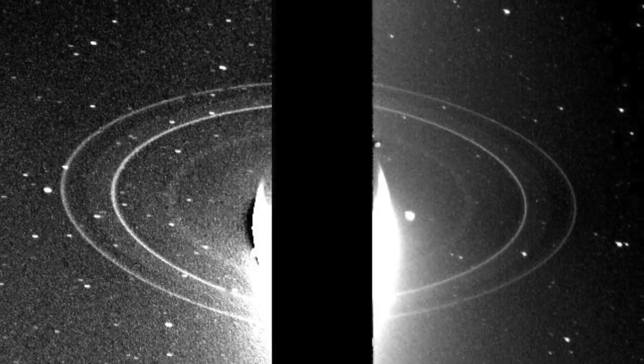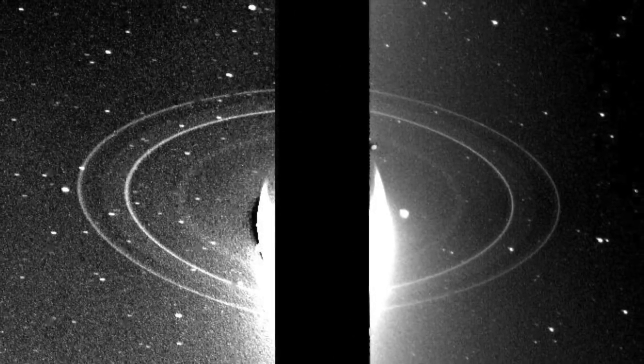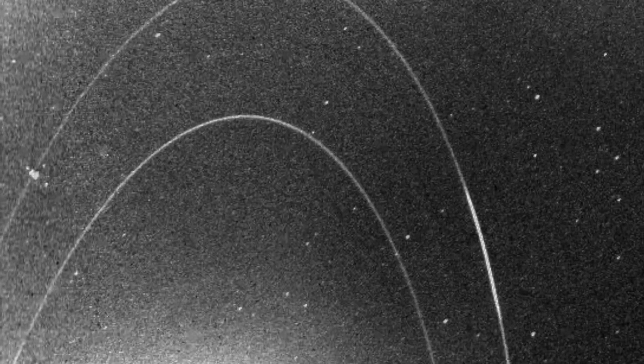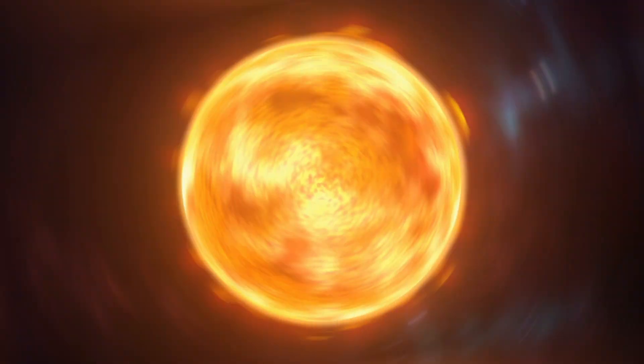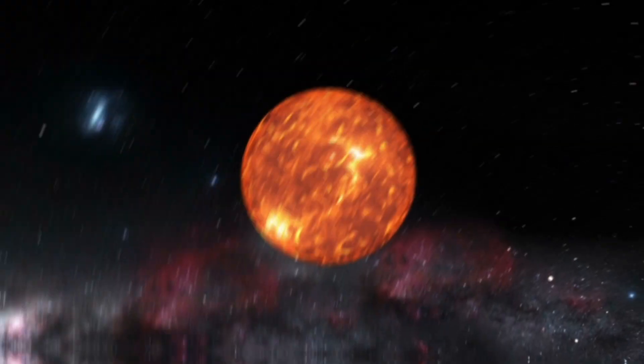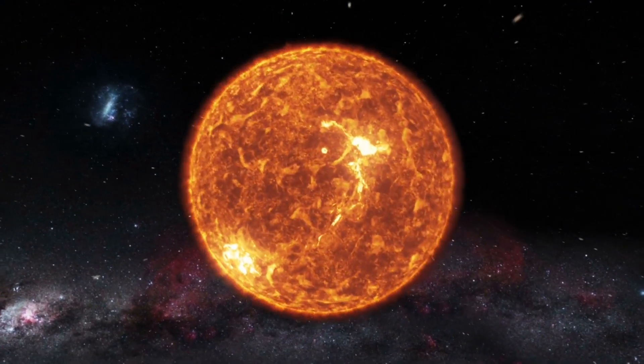This image of Neptune's ring system was created by combining two photographs, one of which had Neptune blacked out in the center. It was a combination of two 10-minute exposures made when the sun was behind Neptune, and the faint ring particles received backlighting.